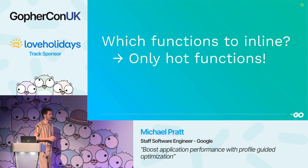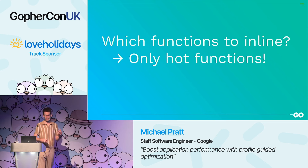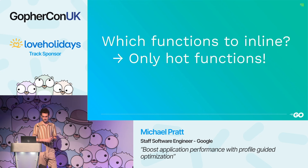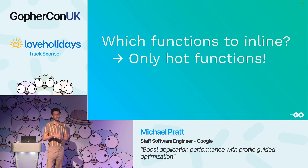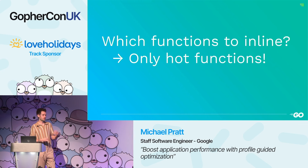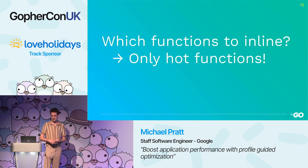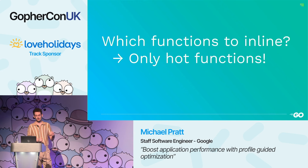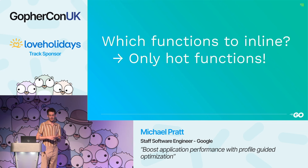Compiler optimizations utilize heuristics to make decisions, and function inlining is no different. The downsides of inlining are largely related to code size — we don't want to make the binary too big or slow down the compiler by giving it too much code to optimize. Therefore, the primary heuristics in the Go compiler for inlining are related to code size: the Go compiler considers small functions safe to inline and large functions not safe to inline. But this is pretty conservative and likely misses some optimization opportunities.